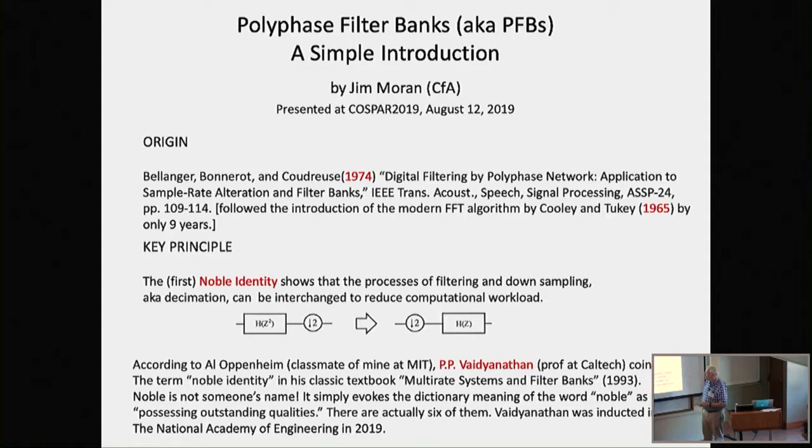Friday, I was preparing my talk, and I called up my classmate at MIT, Al Oppenheim. Many of you might have heard and said, what is a noble identity? Where does that name come from? And it turns out, I couldn't find this in any textbook, but he referred me, he said he spoke to his buddy out of Caltech, who's still alive, P.P. Vaidyanathan. And Vaidyanathan told him that, well, noble is not a person. He's not named after a person like Nyquist. He just called these relationships noble because he thought, you know, he referred to the fact that they possessed outstanding qualities.